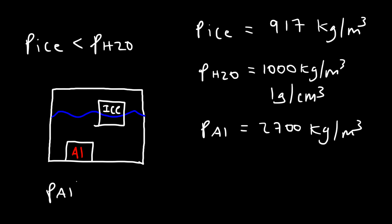Objects with a low density, like wood or ice, tend to float on water. Objects with a density higher than that of water are the ones that sink. So that's how you can tell if an object will sink or float — it's based on density.